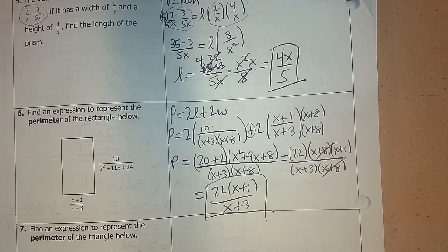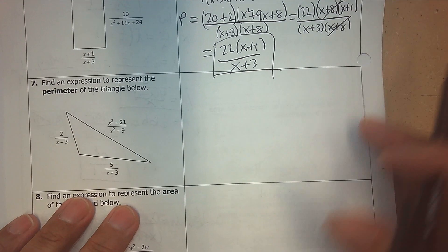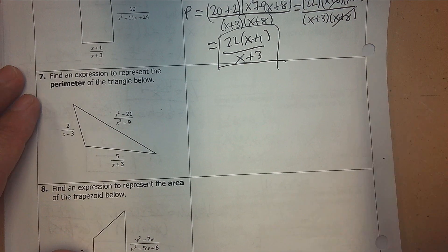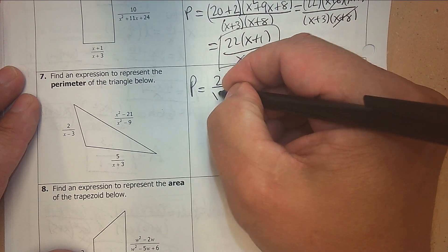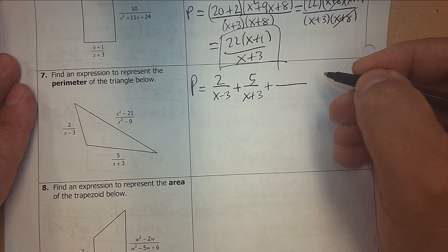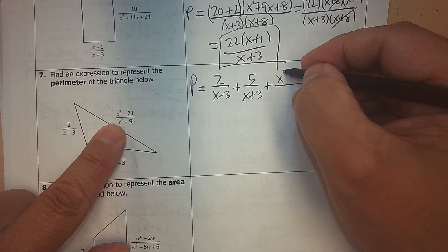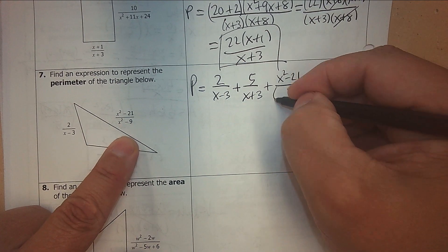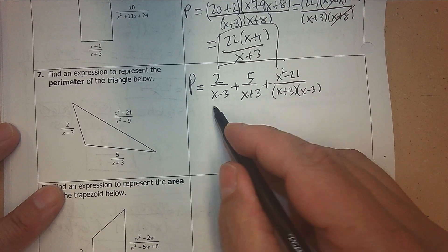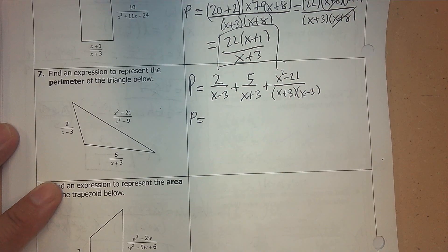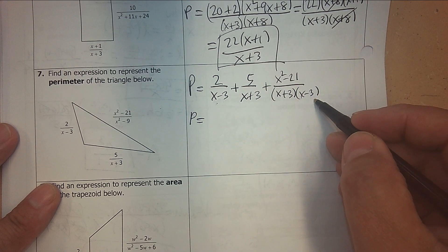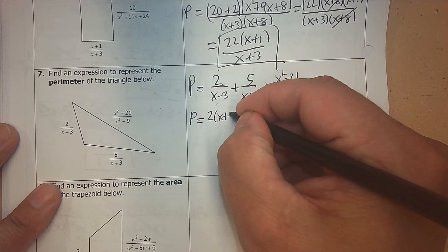Number 7. The perimeter of a triangle just means you add all three sides. The sides are 2 over x subtract 3, 5 over x plus 3, and then x squared subtract 21 over x squared minus 9. The last denominator is factorable. In order to add this up, all denominators need to be the same.